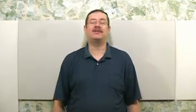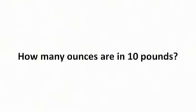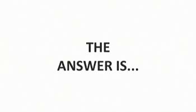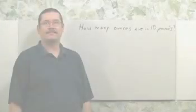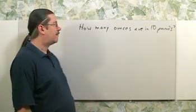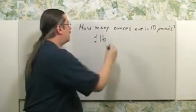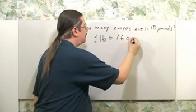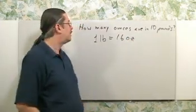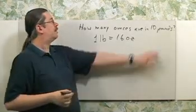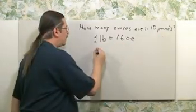Carefully read each problem before writing your answer. How many ounces are in 10 pounds? To answer this question, the first thing you need to realize is that one pound, abbreviated LB, is equal to 16 ounces, abbreviated OZ. We will now convert pounds to ounces.